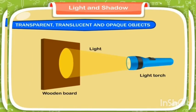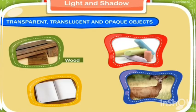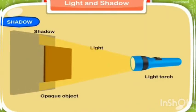Opaque objects are those objects through which light cannot pass, or we cannot see through them. For example, wood, chalk, paper, or any organism. When an opaque object is placed in the path of light, a dark patch is obtained behind the object. That is called a shadow.